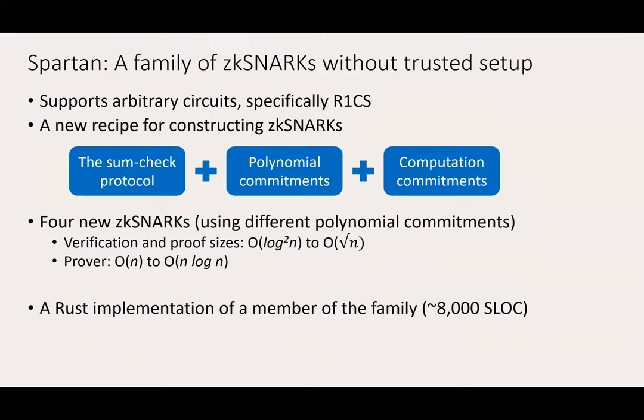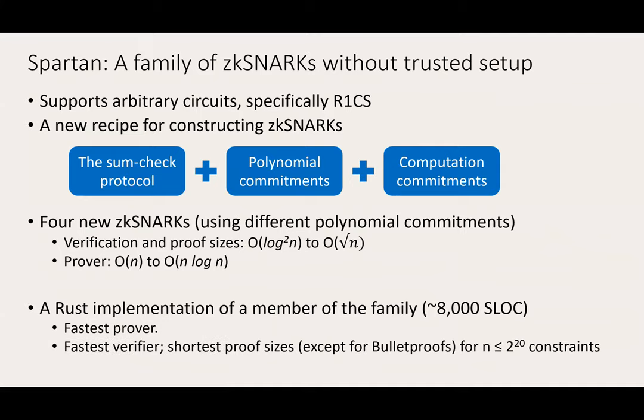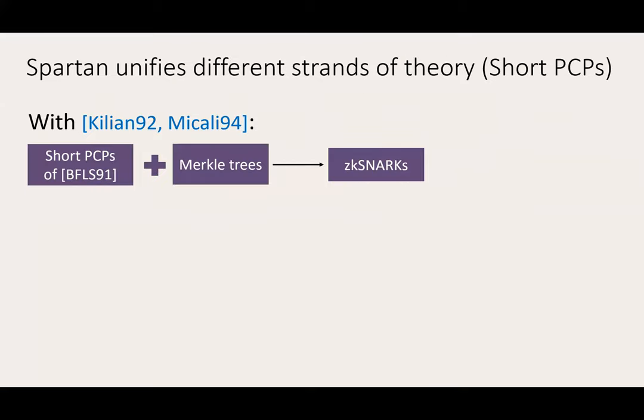We implement a member of this family in about a thousand lines of Rust and compare it with five prior ZK-SNARKs. We find that SPARTAN offers the fastest prover and verifier. Its proofs are shortest except when compared to Bulletproofs, but Bulletproofs incur slower verification both asymptotically and concretely. SPARTAN also unifies different strands of theory from the perspective of ZK-SNARKs.